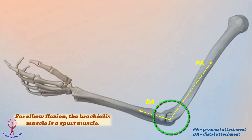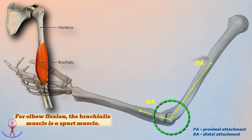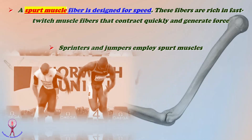For example, at the elbow joint, the brachialis muscle is a chief flexor or spurt muscle, because its proximal attachment is away from the elbow joint and it is distally attached to the coronoid process and ulnar tuberosity of the ulna bone. In the human body, spurt muscle fibers are designed for speed, being rich in fast twitch muscle fibers that contract quickly and generate force.